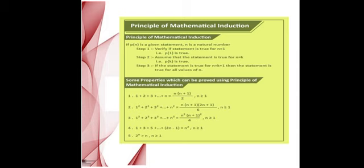The third step is called the inductive step, and in this step the statement will be proved for the value of n equal to k+1. We prove that P(k+1) is true. And we see some properties which can be proved using the principle of mathematical induction.